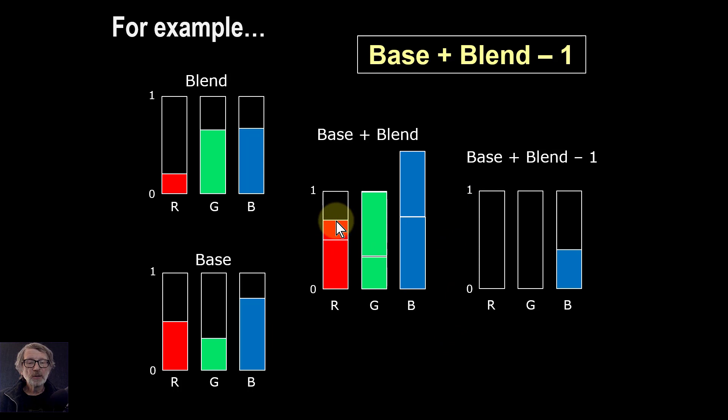So red was part of the way up. So minus one would take it to a negative value. You can't have negative values, so it goes to zero. With green, it went all the way to one, take away one, back to zero. And the blue, that was way past one. So when you take one away from this, you're going to get to somewhere in between. So the result here is going to be a dark blue. And that's all you're going to get.